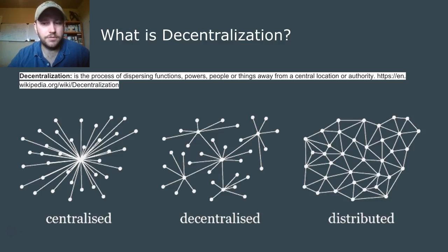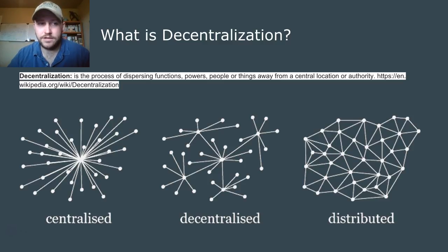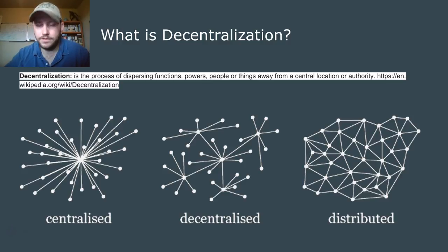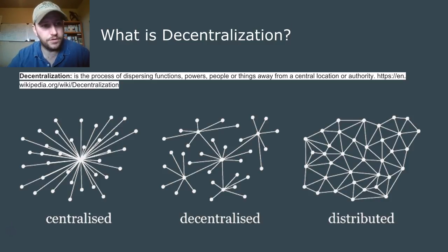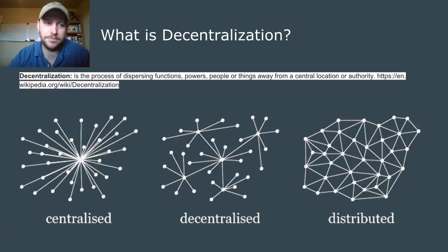In a distributed model, the major qualifier that makes it not decentralized — because they often look very similar — is the fact that you are dependent on another piece of service that's external to your particular application. The idea in a distributed model is you have either a multitude of spans of control, or a singular span of control over a multitude of nodes, but you're always reliant on another service. That's an important distinction.